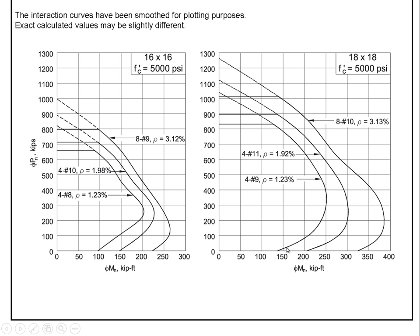So initially P2 can get larger and larger and larger, but then when P1 reaches a certain size, the failure mode is crushing of the concrete and then P2 has to subsequently get smaller and smaller.